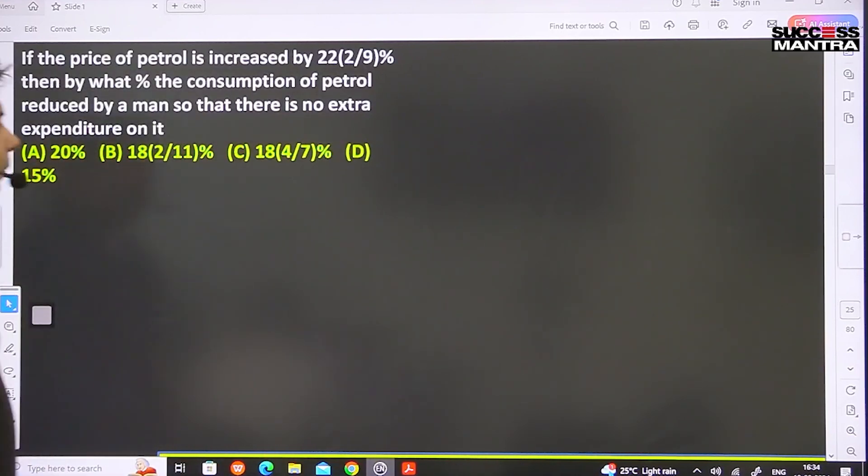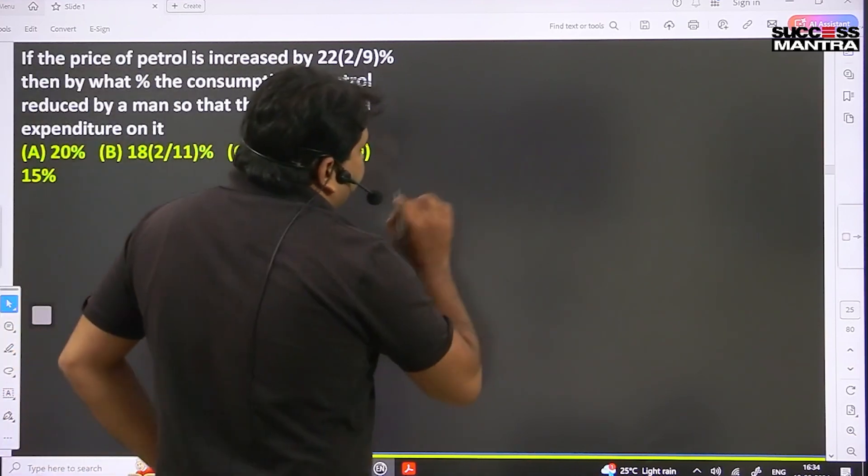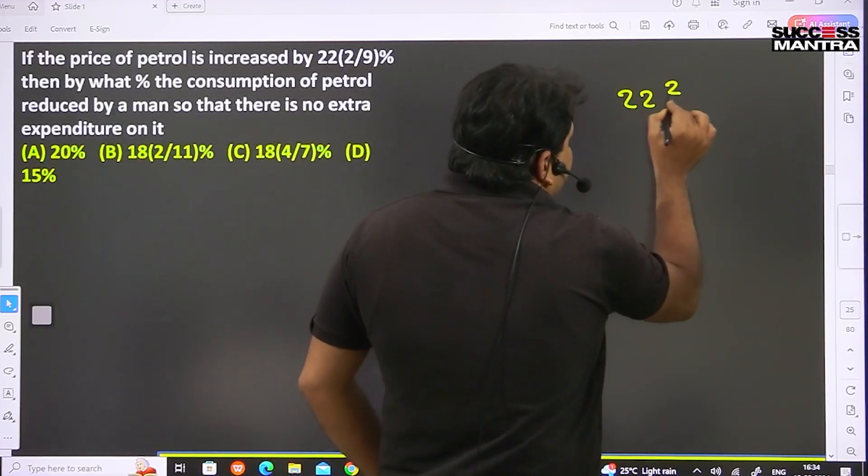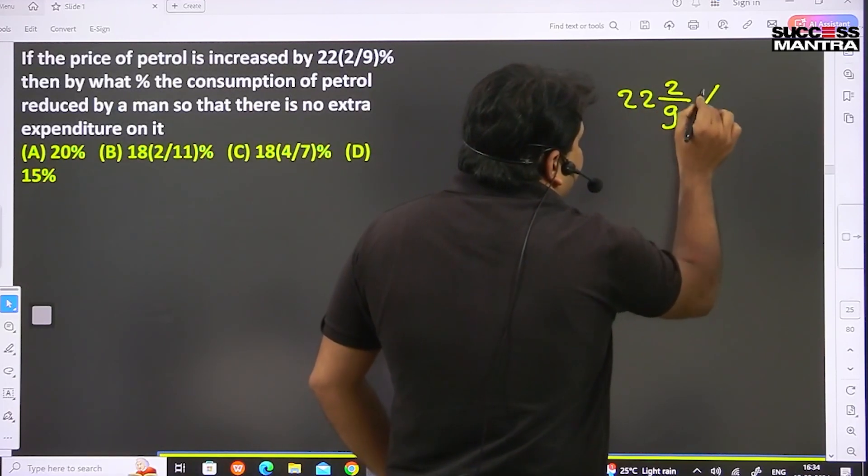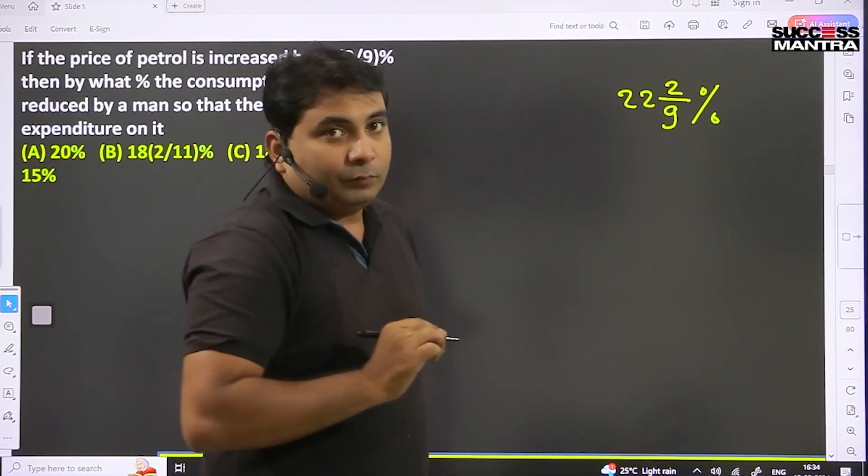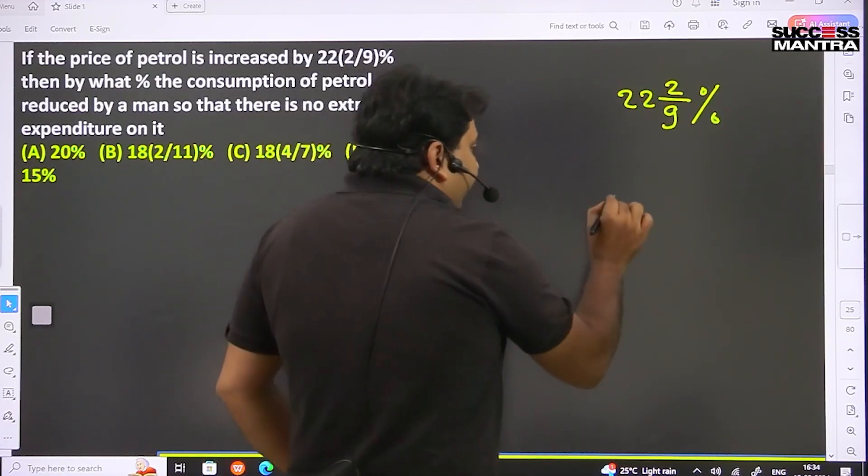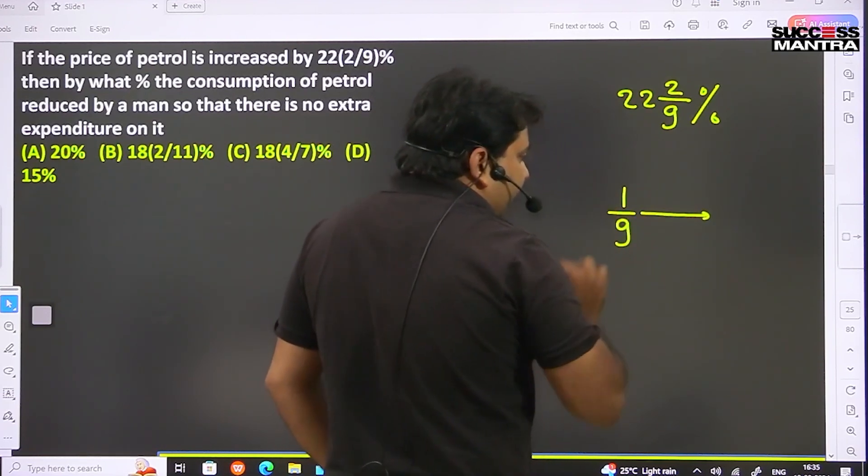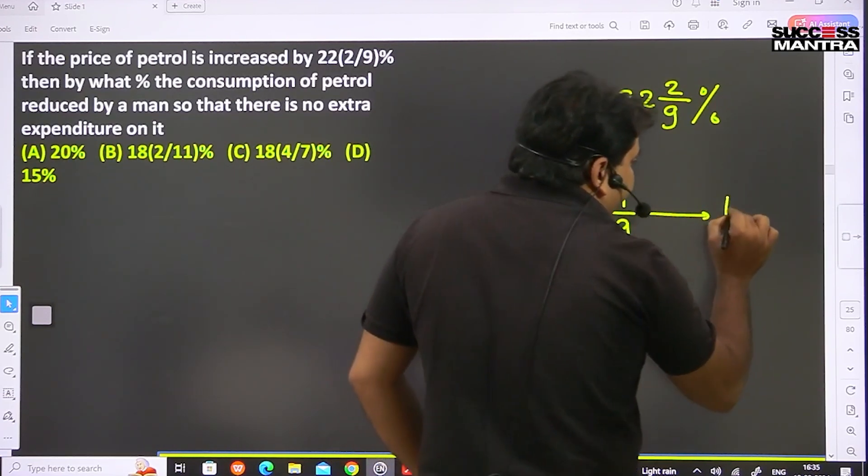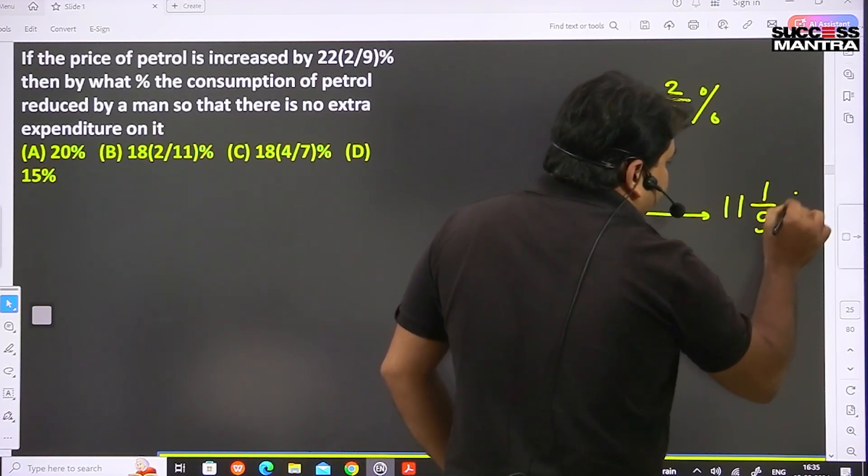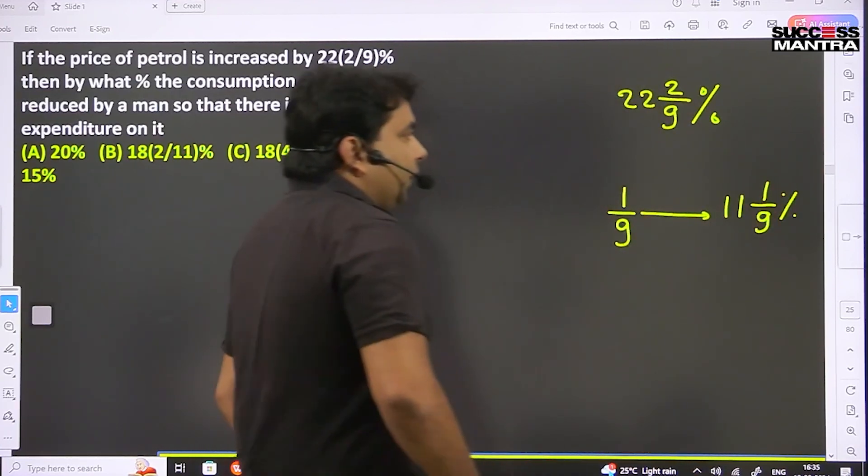The price of petrol increases by 22 2/9 percent. First, you should know what the fraction value of 22 2/9 percent is. We should know what the fraction value of 1/9 is. 1/9 when converted to percentage is 11 1/9 percent. Clear?